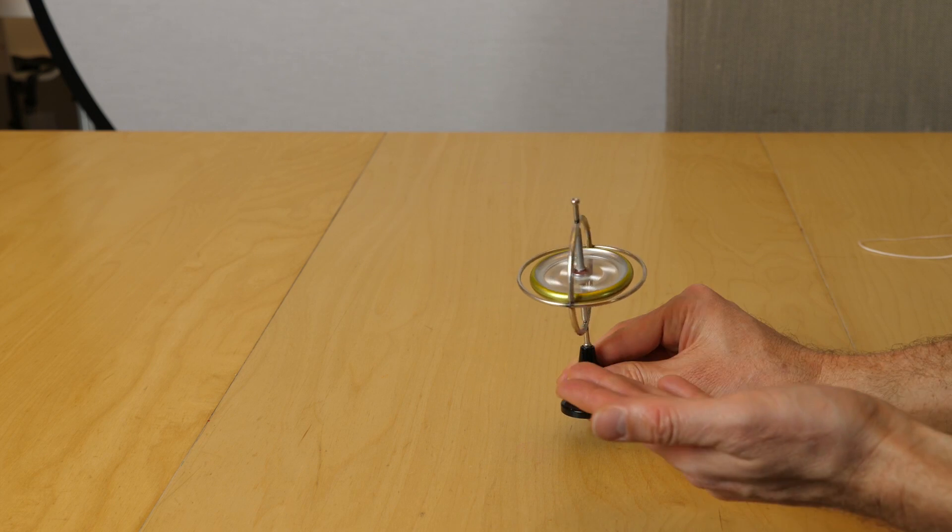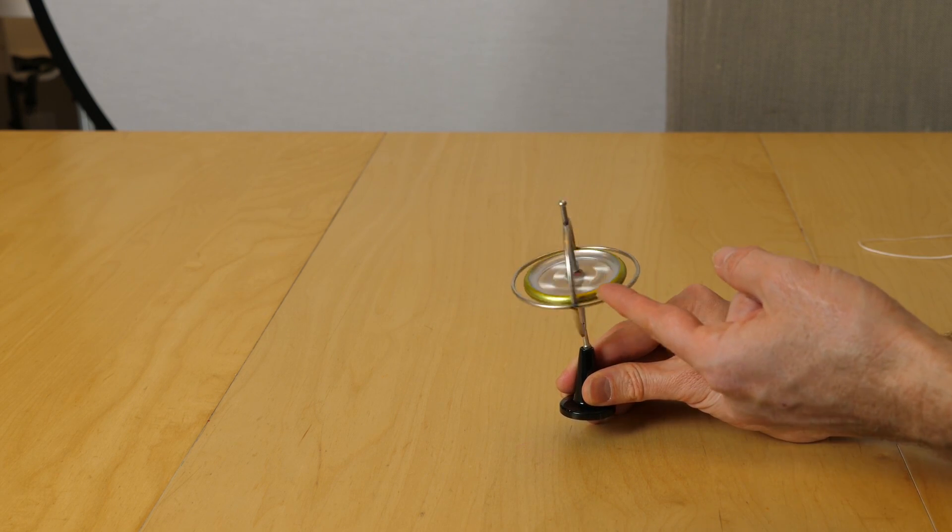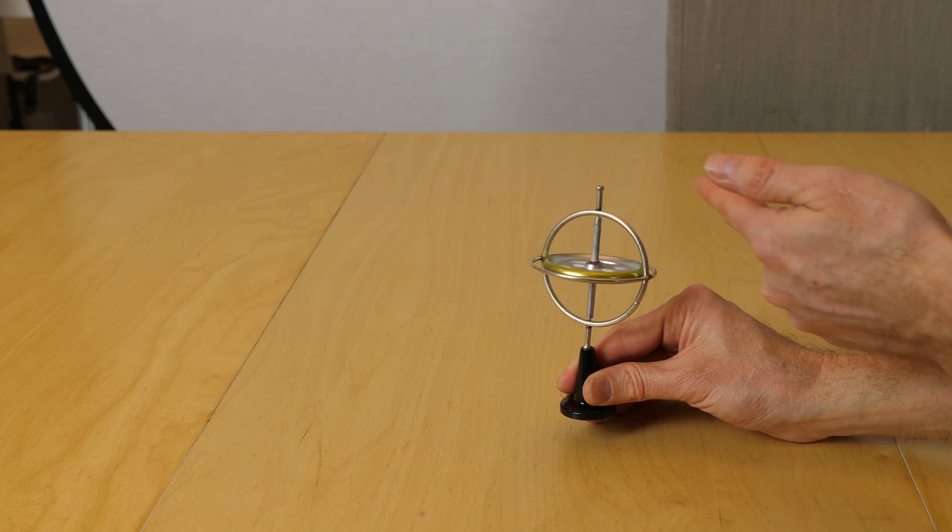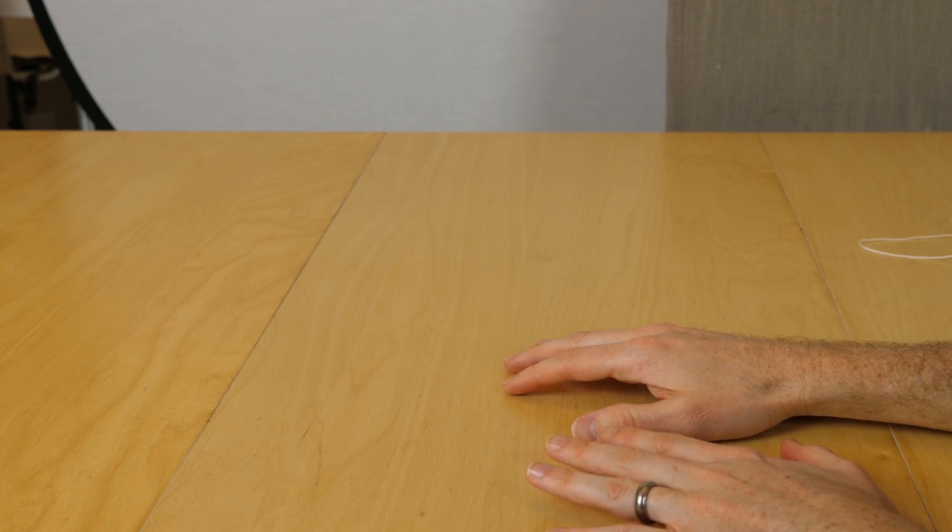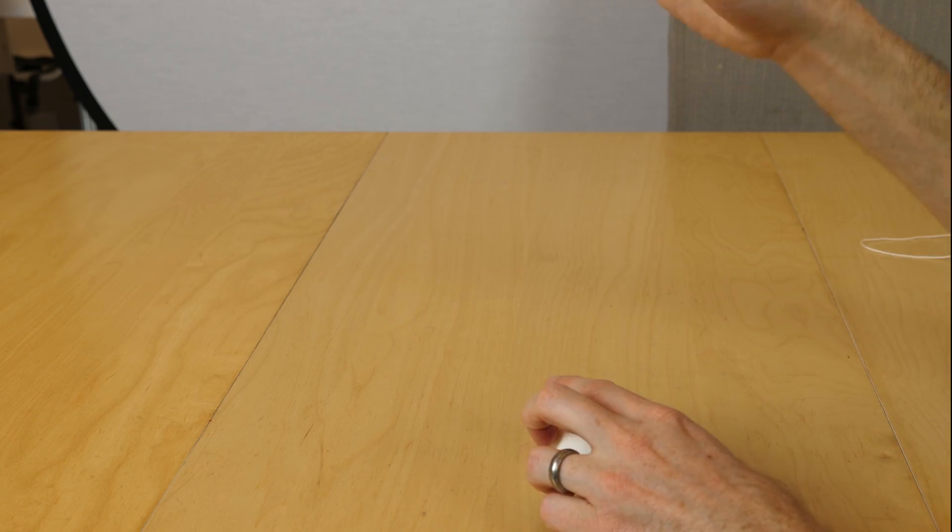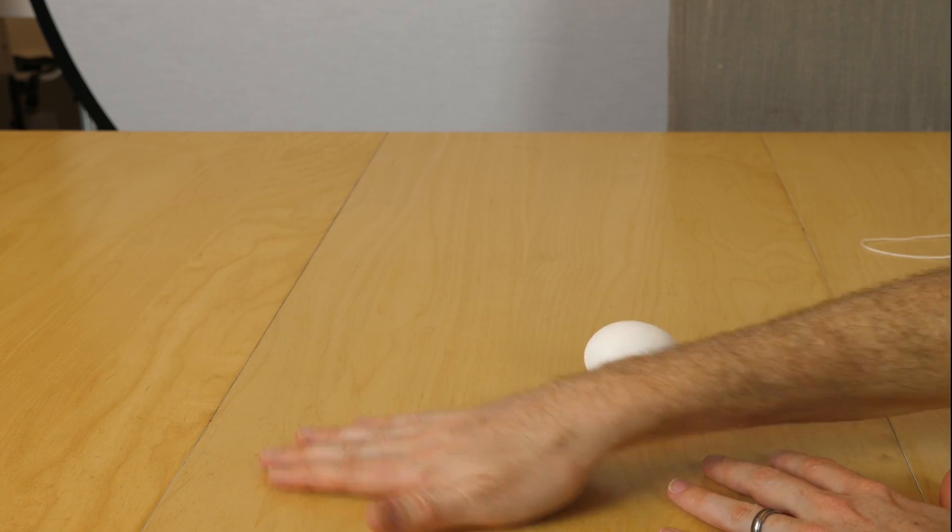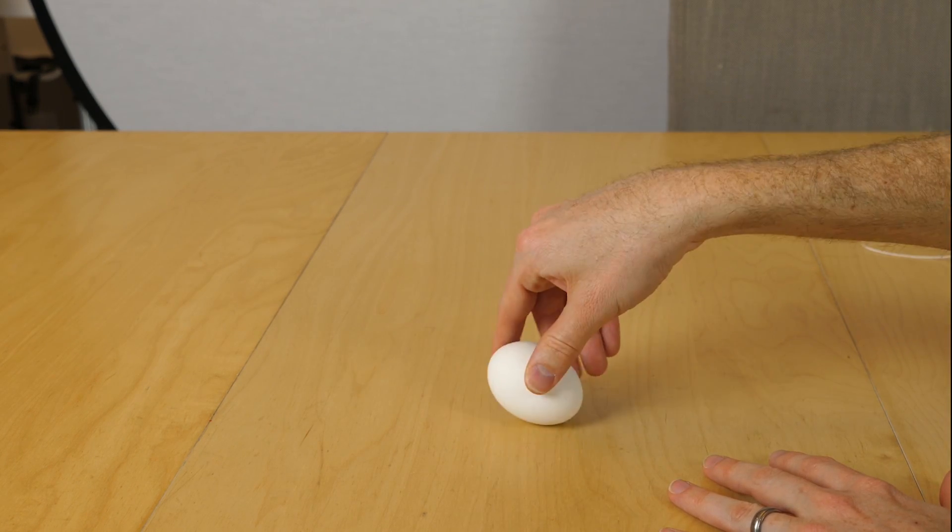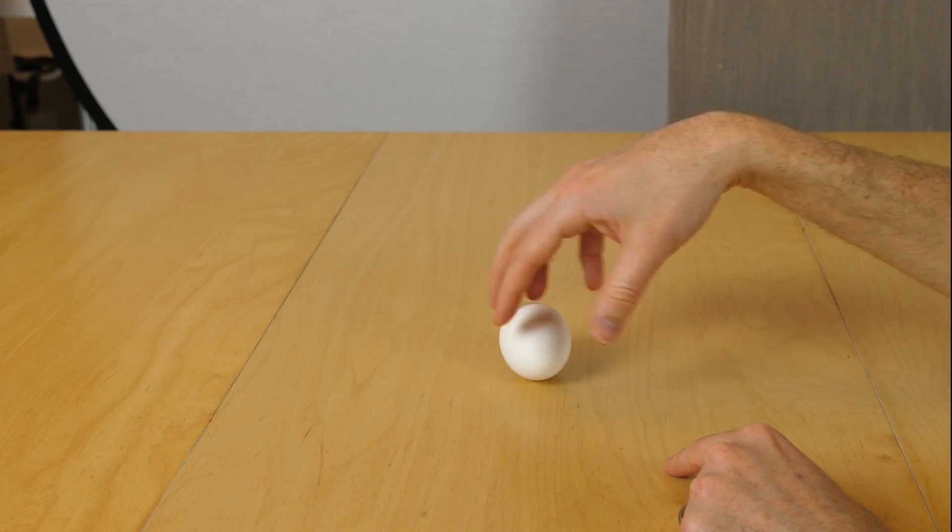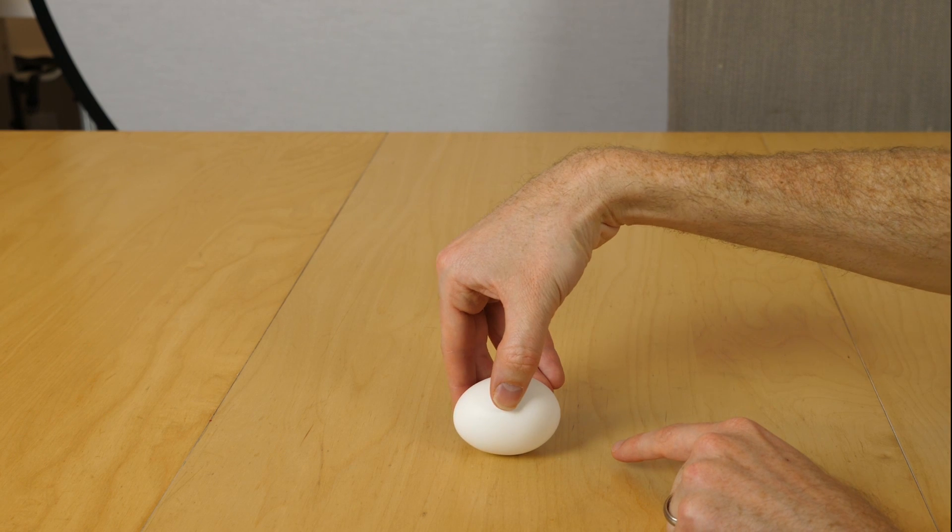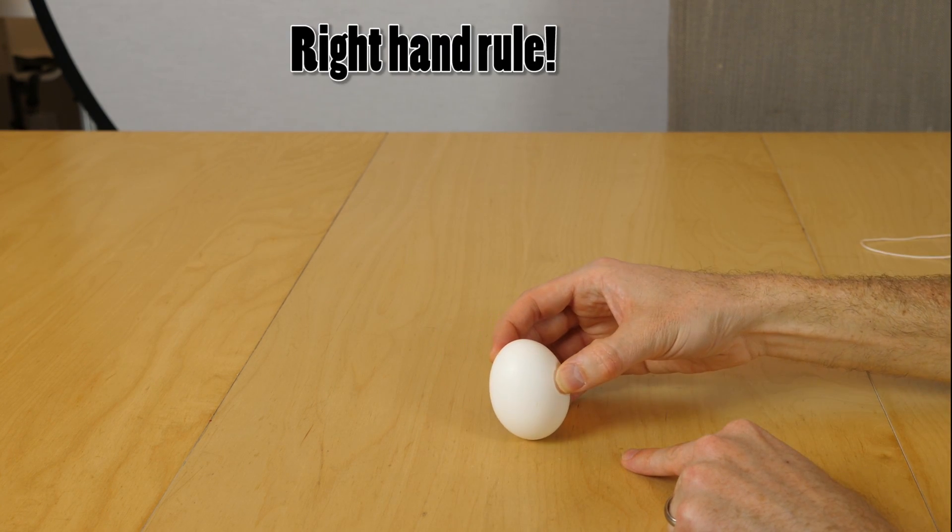So gravity is pulling it down, but that gravity potential energy starts to turn into torque. And the torque starts to turn the gyroscope around in a circle like that. And that's actually exactly what's happening with the egg. But instead of gravity causing torque on the egg, it's actually a different force. It's the friction on the table. So when you spin the egg, there's some friction on the table that's opposing the force.